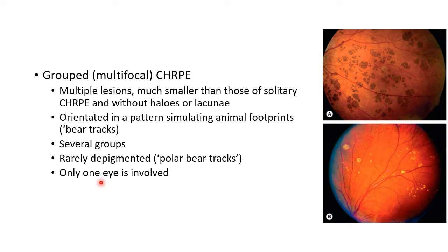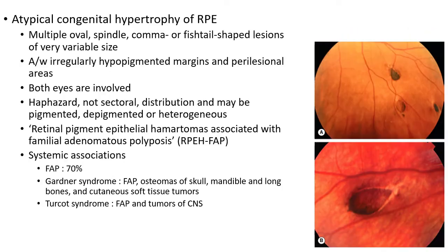In grouped or multifocal CHRPE, only one eye is involved. This is helpful in differentiating multifocal CHRPE from atypical CHRPE. In atypical CHRPE, there will be multiple oval, spindle, comma, or fishtail shaped lesions of variable size, associated with irregularly hypopigmented margins and perilesional areas. In atypical CHRPE both eyes are involved, with haphazard distribution. The lesions can be pigmented, depigmented, or show heterogeneous pigmentation.